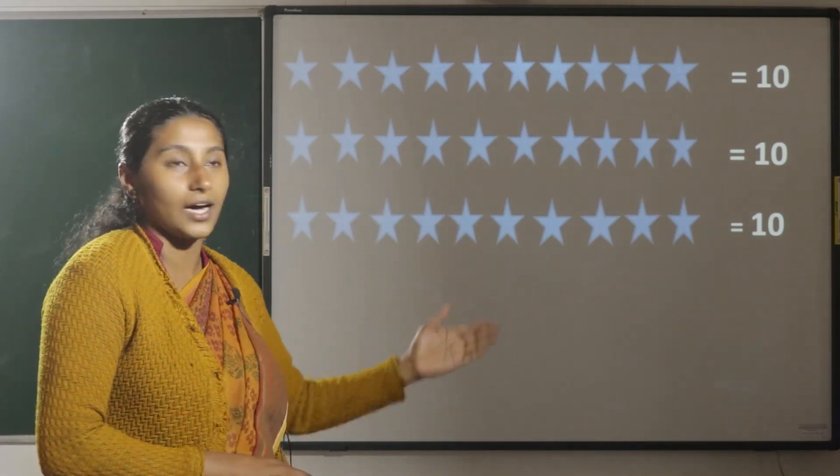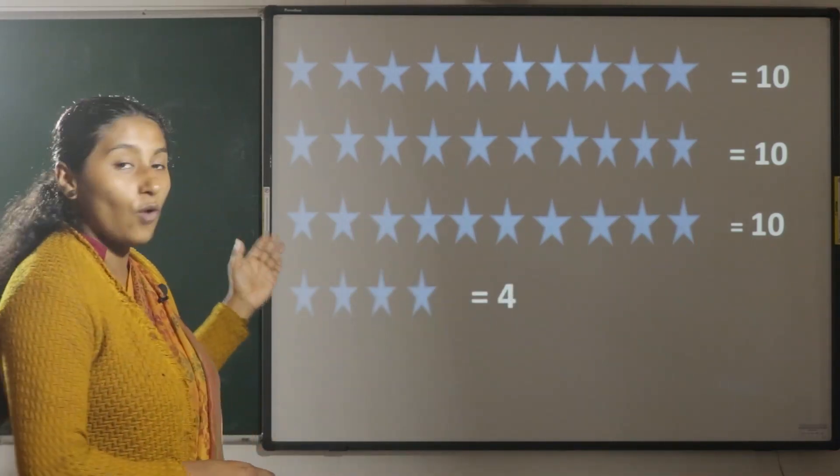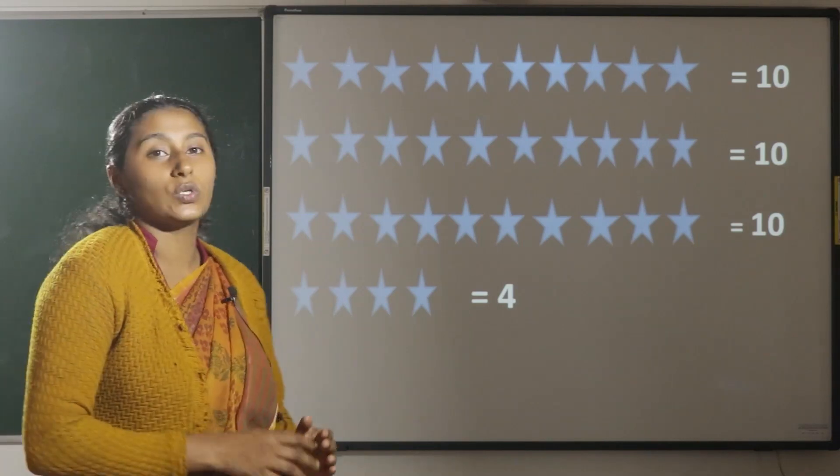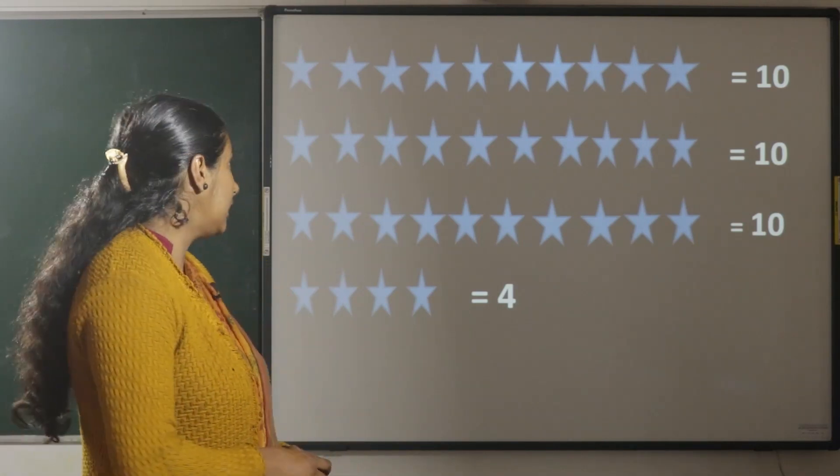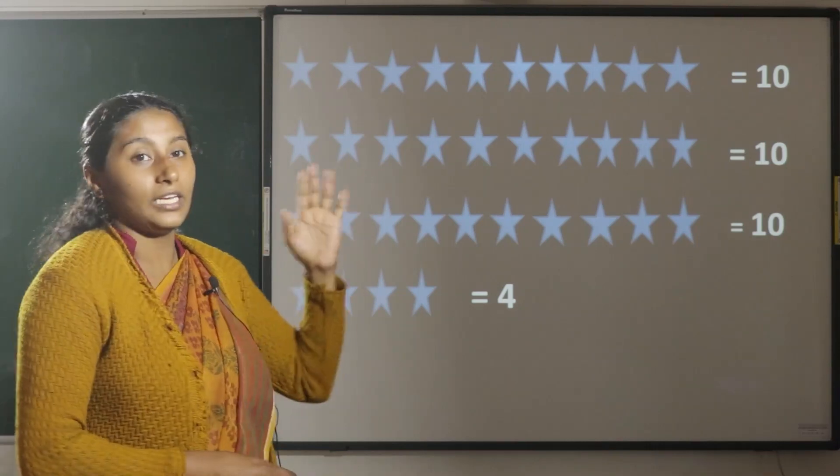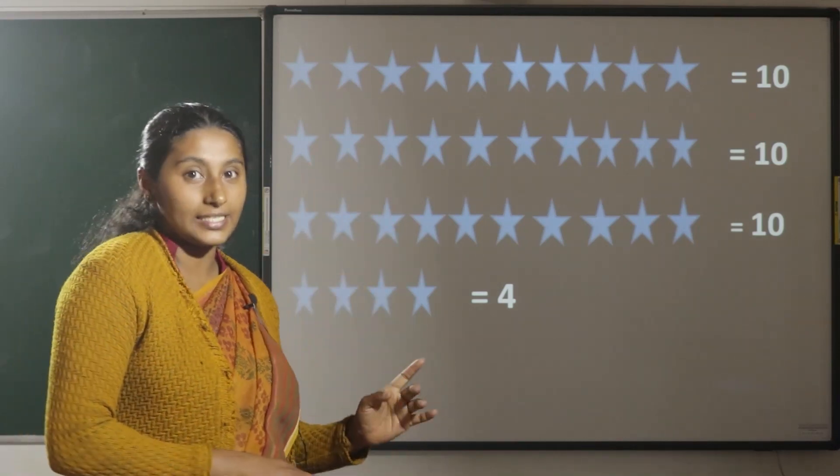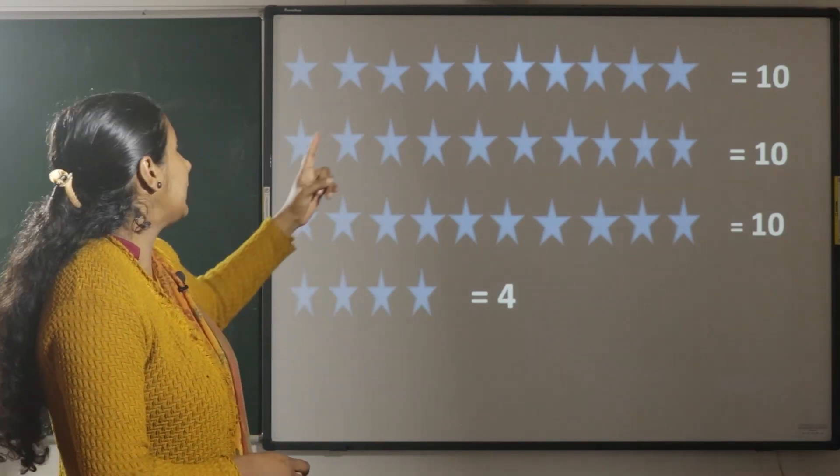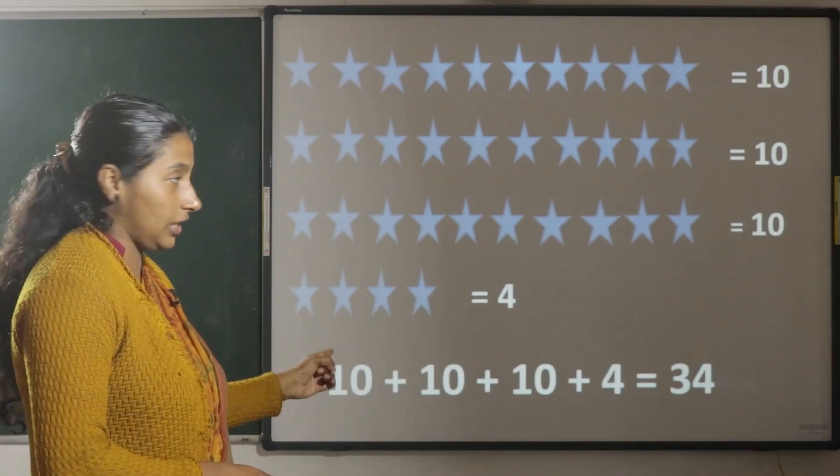In the fourth line, there are 4 stars. So, when we count together, there are 3 groups of 10 stars and one group of 4 stars. So, 10 plus 10 is 20.